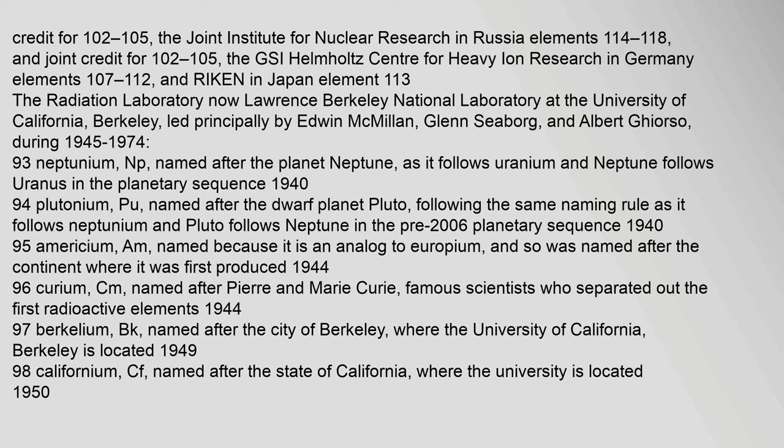RIKEN in Japan discovered element 113. The Radiation Laboratory, now Lawrence Berkeley National Laboratory at the University of California, Berkeley, led principally by Edwin McMillan, Glenn Seaborg, and Albert Ghiorso during 1945–1974, discovered: element 93, Neptunium (Np), named after the planet Neptune as it follows uranium, and Neptune follows Uranus in the planetary sequence, in 1940; and element 94, Plutonium (Pu), named after the dwarf planet Pluto, following the same naming rule, in 1940.